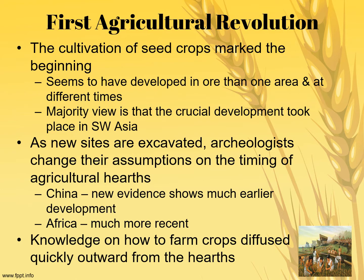The first agricultural revolution started in Southwest Asia about 10,000 years ago. This is when we went from being exclusively hunter-gatherers to learning how to farm — the cultivation of seed crops. It developed in more than one area: the Fertile Crescent, the Northern China Plain, parts of Africa, and parts of the Americas. Humans around this time period all figured out how to domesticate crops and animals.